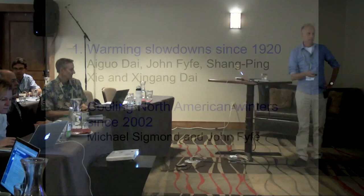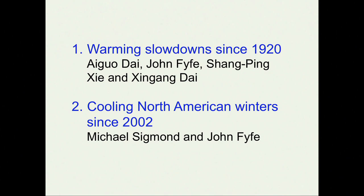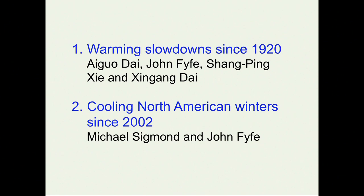My talk is going to be in halves. In the first half, I'm going to talk about warming slowdown since 1920, and this is work with these people here, including Shang Ping. In the second half, I'm going to talk about cooling North American winters since 2002, with Michael Sigmund, a long-term collaborator. We've mainly worked on polar ozone depletion and its impacts on Antarctic sea ice, so this is new territory for us.